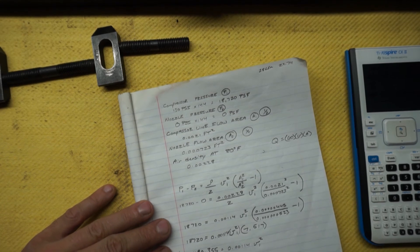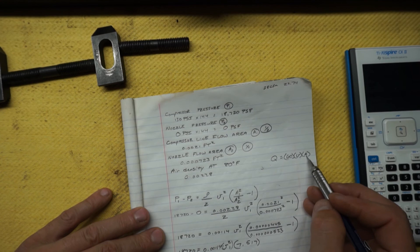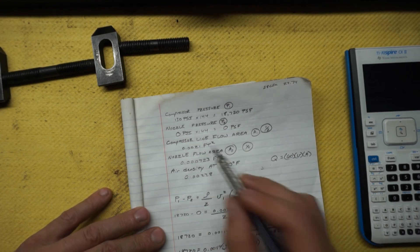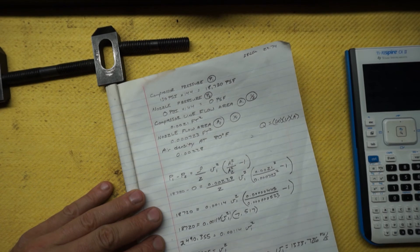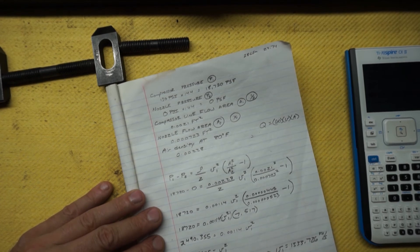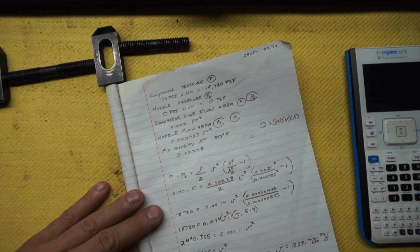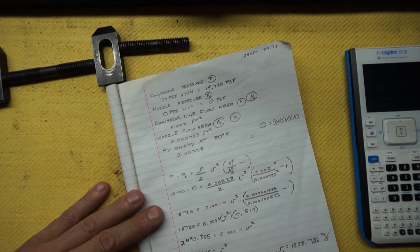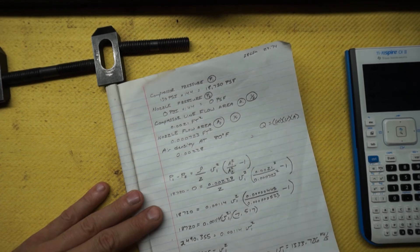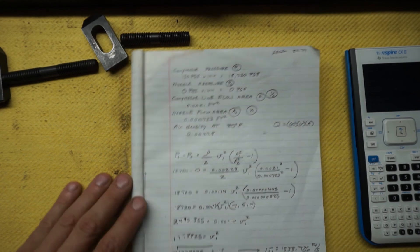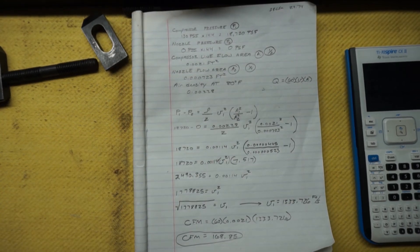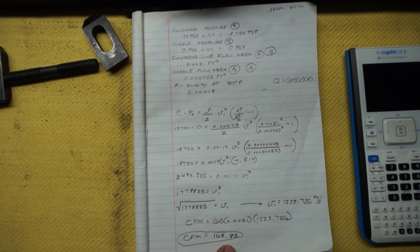But now we need CFM. Remember like up here, we know the area at the compressor, which is the 0.0021. So we got 60 seconds to convert, we got the area which is 0.0021, now the velocity 1,333.726 feet per second. Now we multiply all those together. We get CFM equals 168.85. And that is the required CFM from the compressor that you always have to have, always. Once you have that, you're all set.